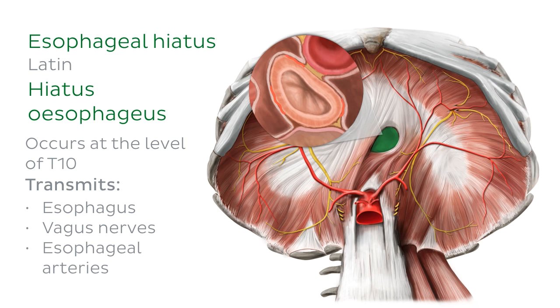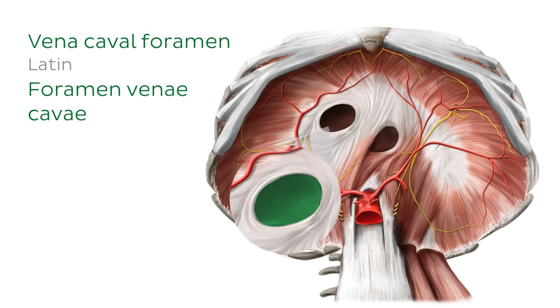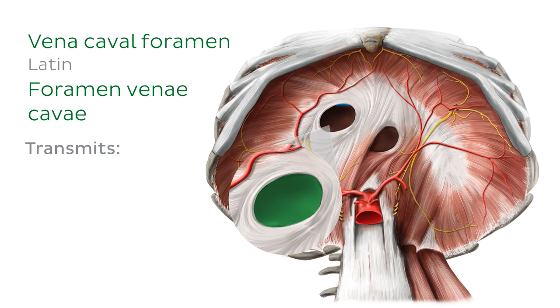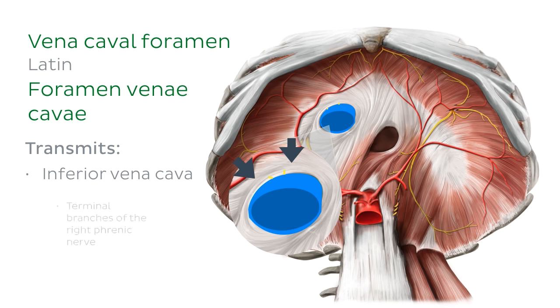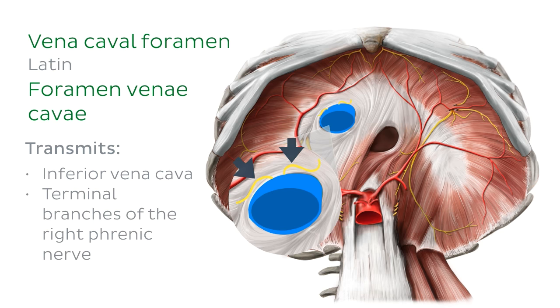The last major opening is the caval hiatus, which lies at the level of T8. The caval hiatus transmits the inferior vena cava and the terminal branches of the right phrenic nerve.